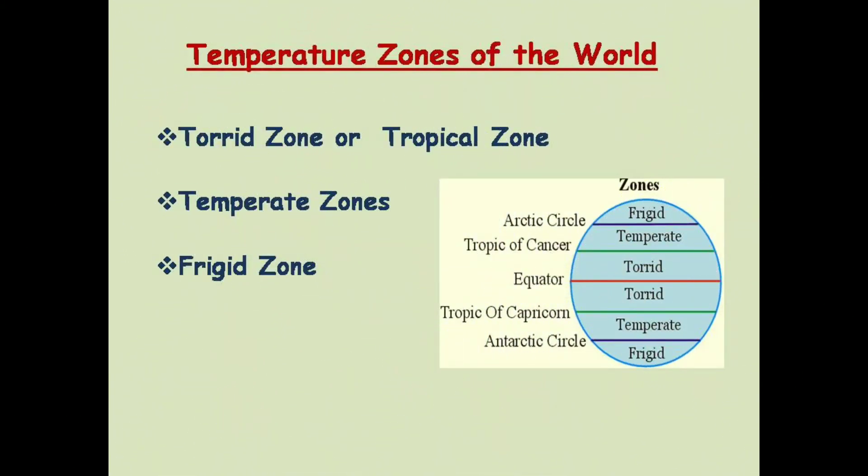Children, based on the heat received from the sun, the earth is divided into three heat zones of the world. These three heat zones are: the first one is the torrid zone or tropical zone, the second one is the temperate zone, and the third one is the frigid zone.